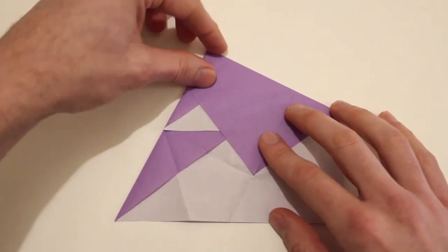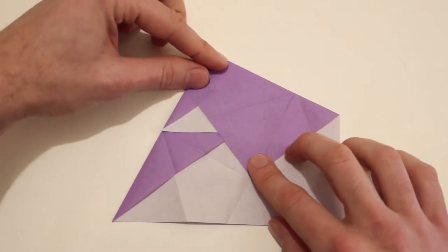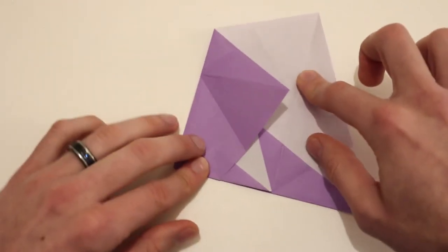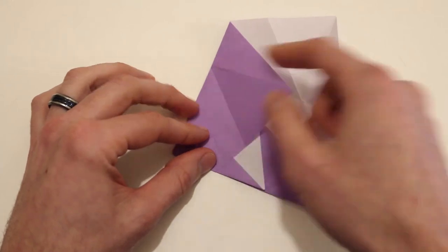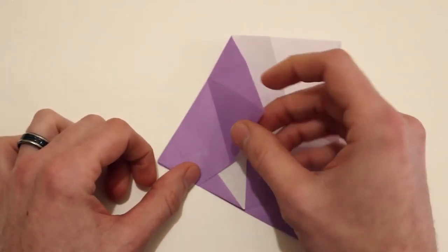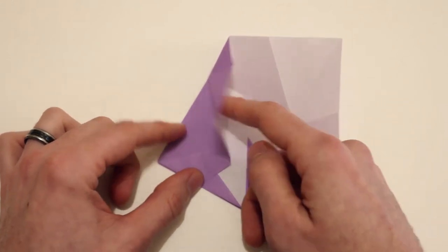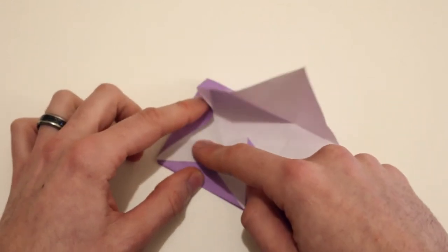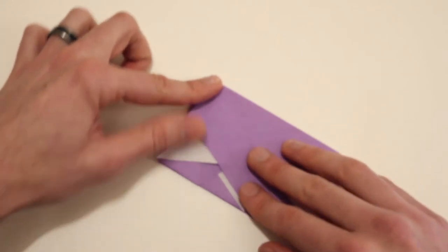Then you can leave that folded and rotate. And then we're going to use all those creases that we have in place already. Bring this valley fold over, fold again, and press everything down like this.